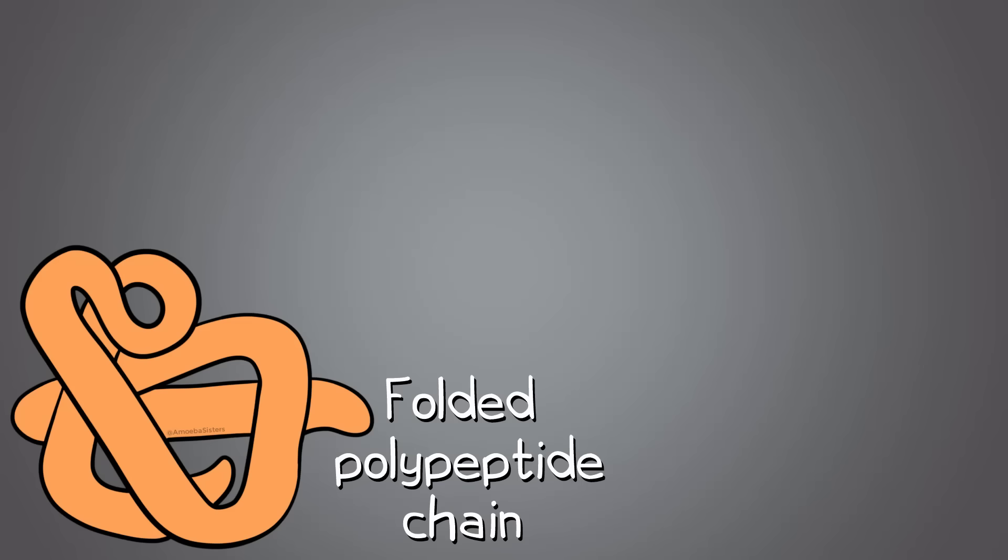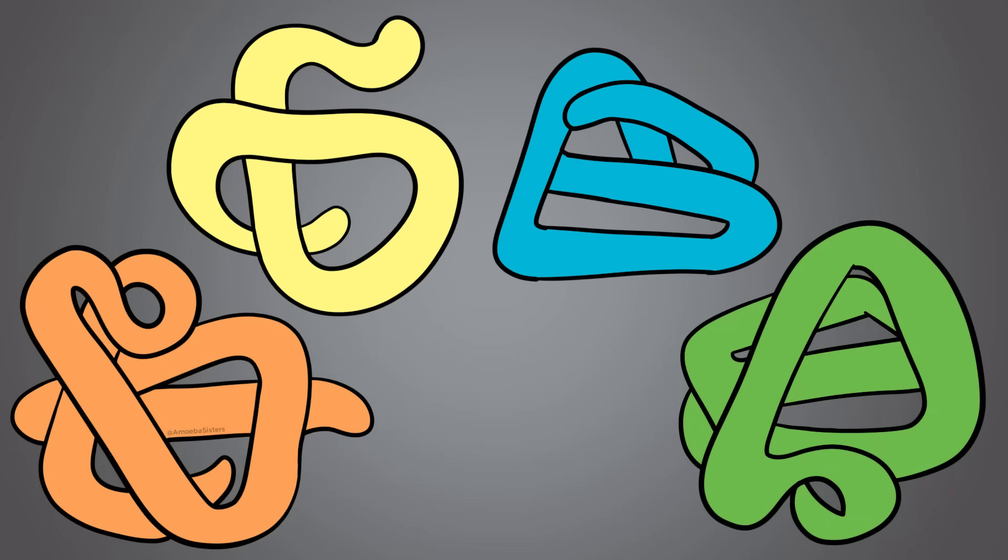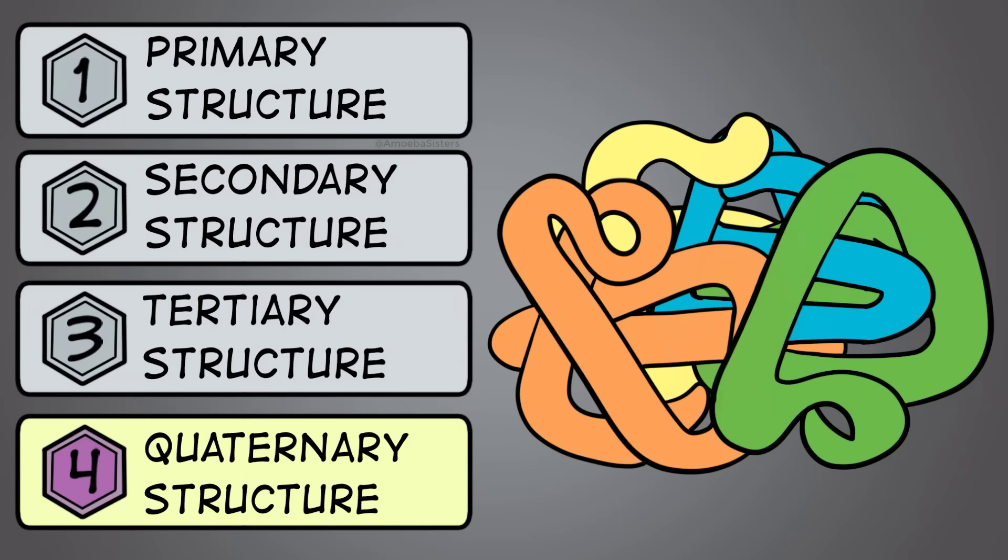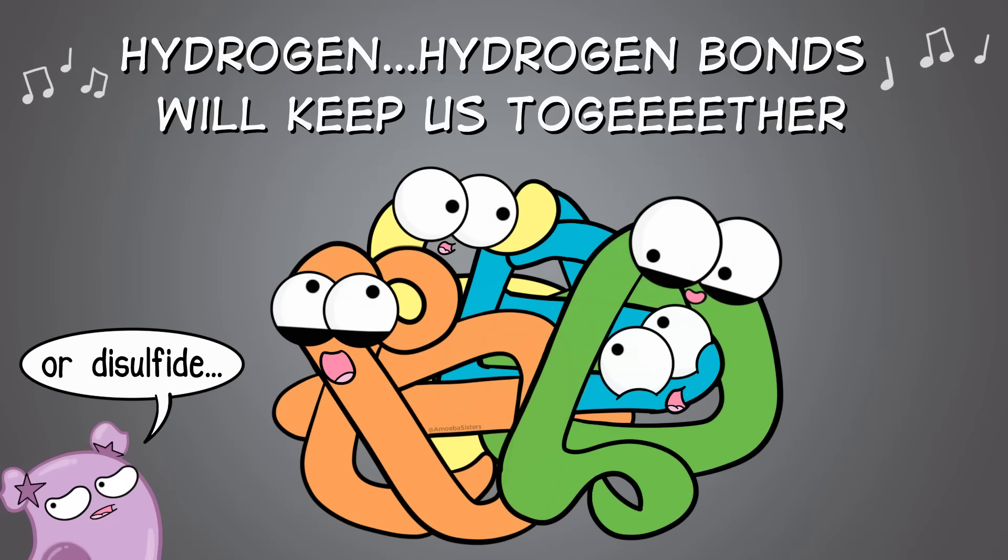Now when we've been talking about a protein, we've been talking about a polypeptide chain that has been folded into a functional protein. But proteins can be made of one or more polypeptide chains, and in quaternary structure, you are looking at a protein consisting of more than one polypeptide chain. Each of these polypeptide chains can be a subunit, and interactions between them, such as hydrogen bonds or disulfide bonds, can keep them together.